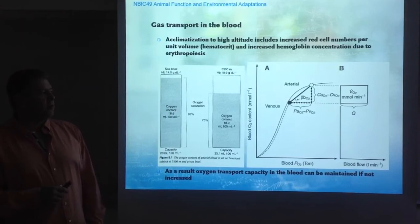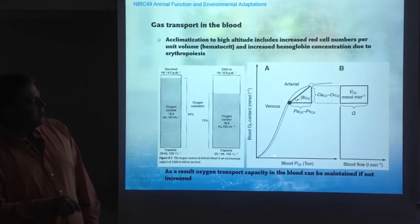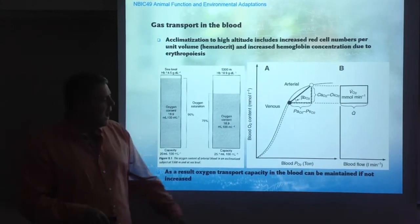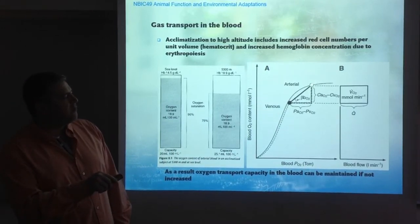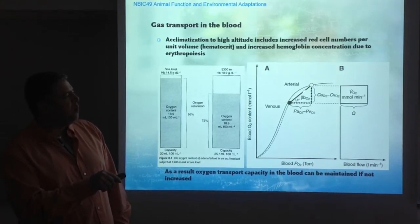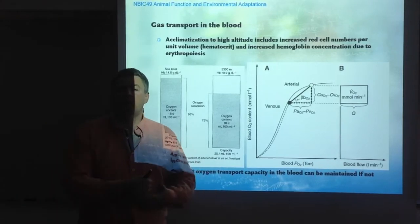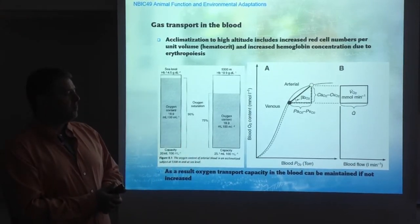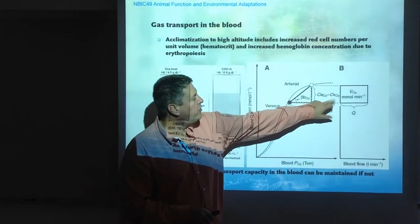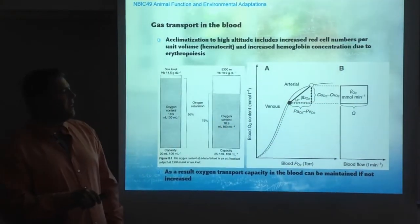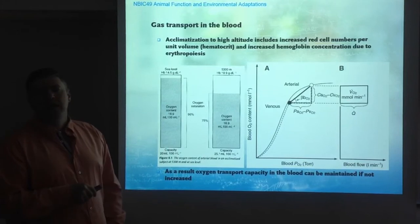This is an acclimatization response, which you can also see by looking at the oxygen dissociation curve. The oxygen dissociation curve shows how the partial pressure of oxygen is related to the content of oxygen. As you go down the curve, you move from the arterial side to the venous side of the circulation, and the amount of oxygen downloaded represents the oxygen used by the tissues. This difference between arterial and venous oxygen concentration, multiplied by the blood flow, gives you the oxygen uptake — the oxygen consumption.